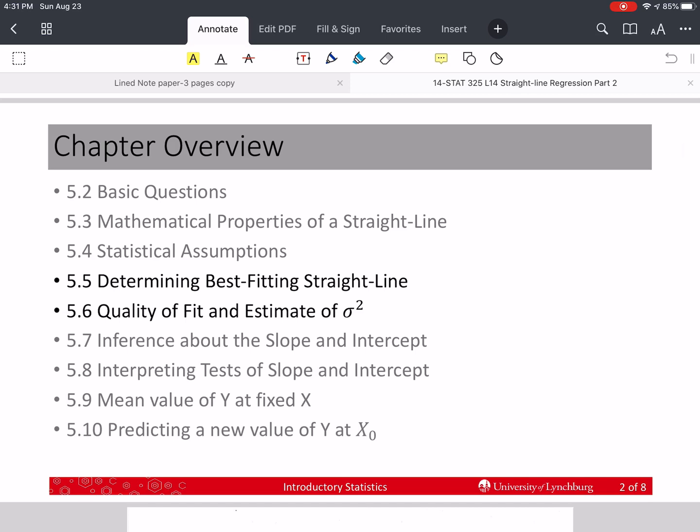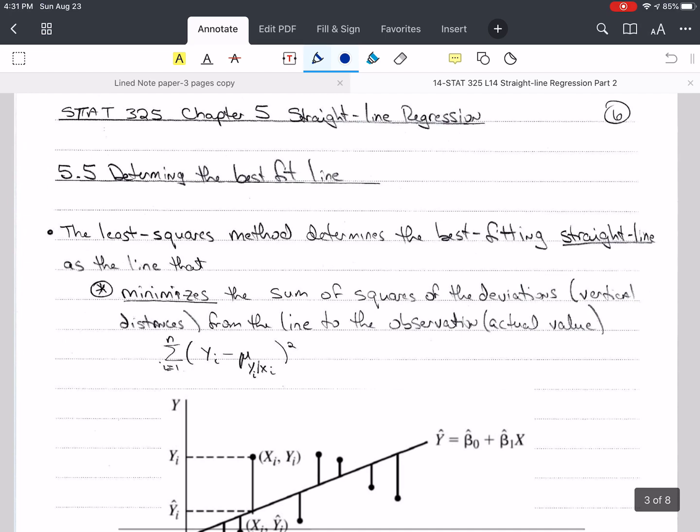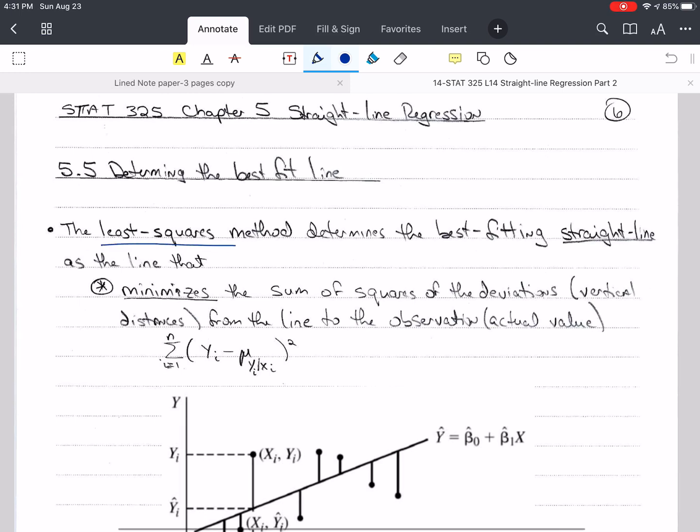We're talking about the best fitting straight line and the quality of that fit, and the measure we use to talk about the quality of the fit is the estimate of the variance. So let us begin with determining the best fit line. We do this using something called the least squares method and it requires calculus but we're not going to require you to do that in this course. This course doesn't require calculus as a prerequisite.